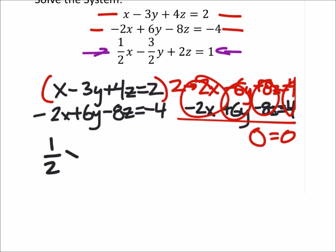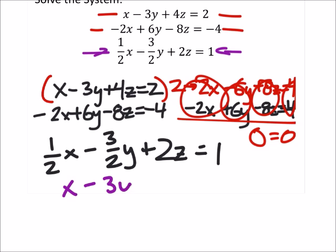So we got that one half x minus three halves y plus two z equals one. And which other equation do we want to compare that with? The top one. So we got x minus three y plus four z equals two.